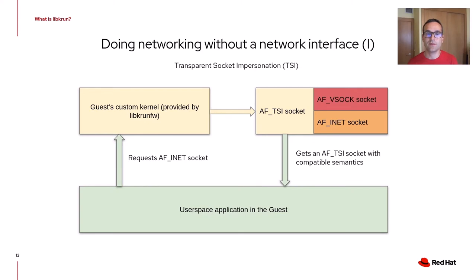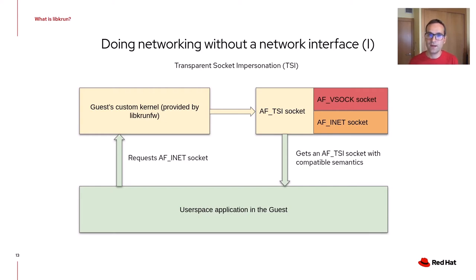Similarly to what happened with block devices, among the virtual devices supported in LibKRUN there is no support for Virtio Net. So how are we doing networking without network interfaces? We are using a novel technique called Transparent Socket Impersonation, or TSI. What happens is that when a user space application running on the guest requests the kernel for an AF_INET socket, the guest custom kernel provides it with an AF_TSI socket instead, which has compatible semantics. This AF_TSI socket integrates both a VSOCK and an INET personality within it. This all happens in a completely transparent way for the user space application, which doesn't require any modification to explicitly support TSI.